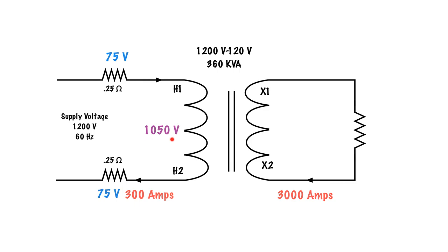Because if we have 1050 volts here, then we've got divided by 10 because our turns ratio haven't changed at all. We're going to end up with a different voltage on this side. We expect 120, but we're actually going to get 105 volts, which could be an issue.